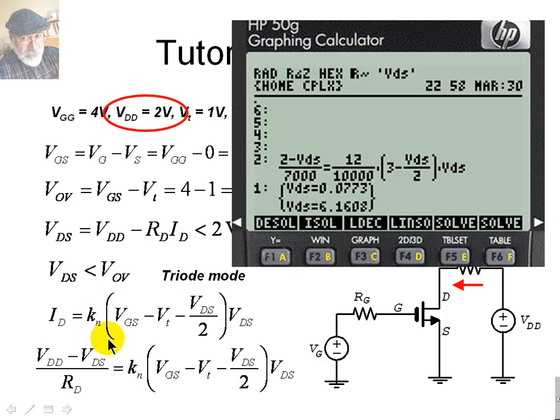VDD, 2 volts minus VDS, the unknown, divided by RD, 7,000 ohms. That is equal to KN, 12 milliamp... I'm writing 12 milliamps, divided by 10,000. Sorry, it's not 12, it's 1.2 milliamps per volt square. Multiplied by this is 4 minus 1, that is 3 volts, minus VDS divided by 2 times VDS. I punch enter with this key, F5, and I get the two solutions to that quadratic equation.